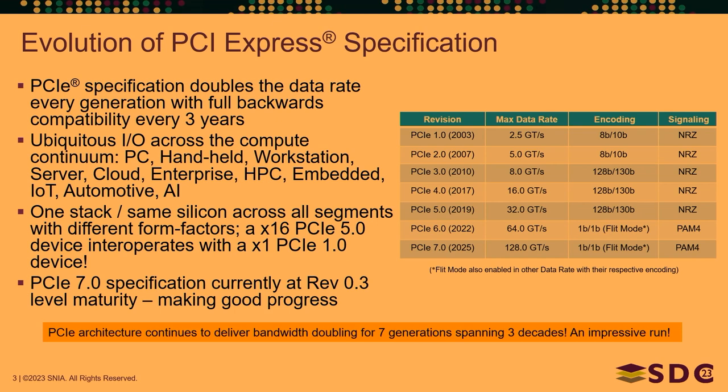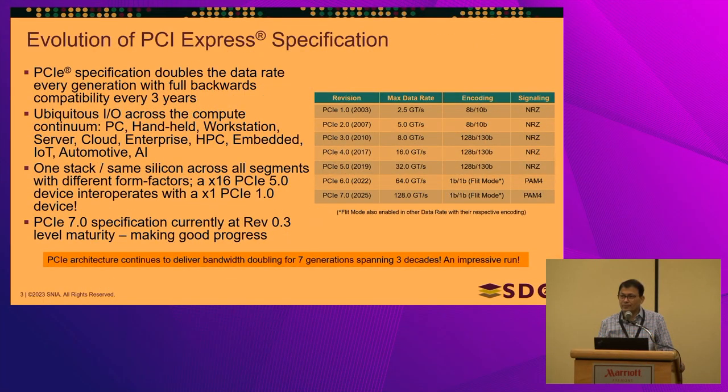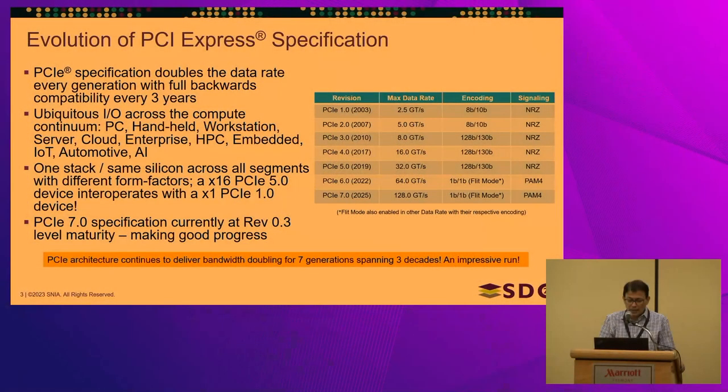The impressive thing is that it's one stack in the same silicon but it works across all of these segments using different form factors. It's also fully backward compatible. So if you take a PCIe Gen 5 system today with a x16 slot capable of running at 32 gig, and you have an old Gen 1 card — maybe x1, runs at 2.5 gig — you put it in that slot, it will still work.